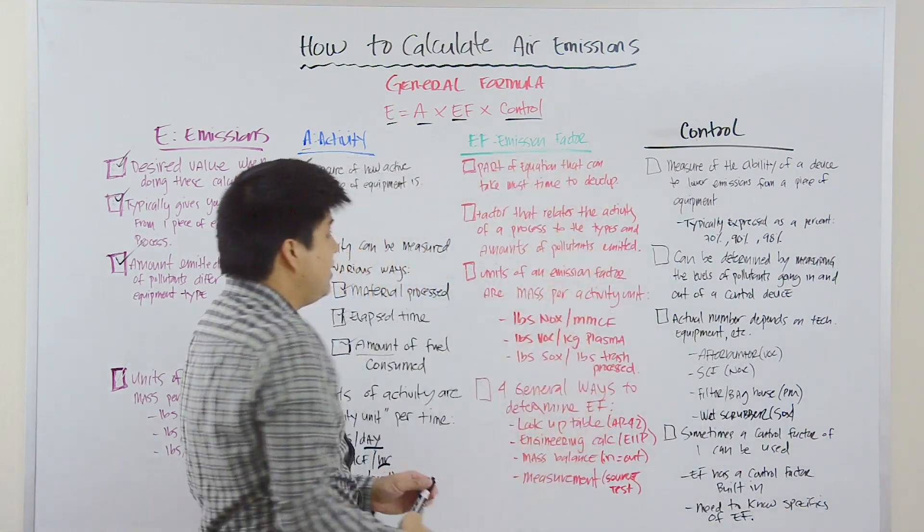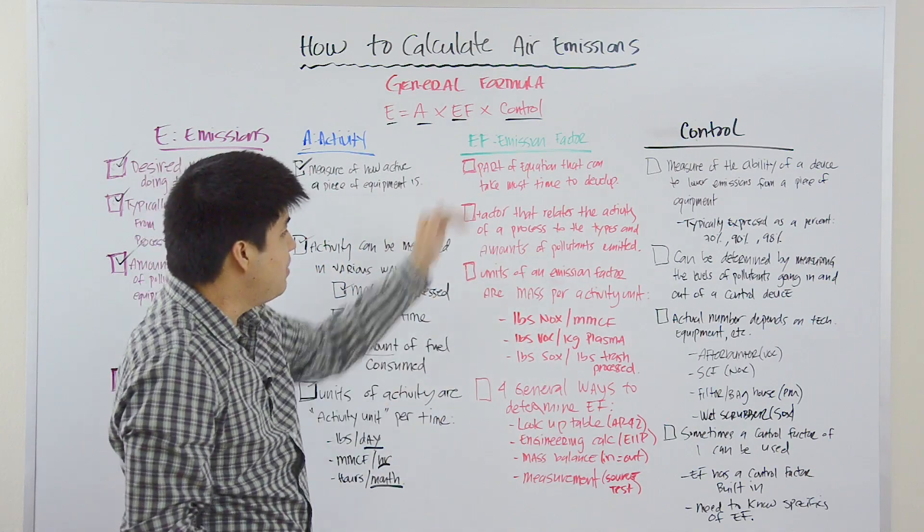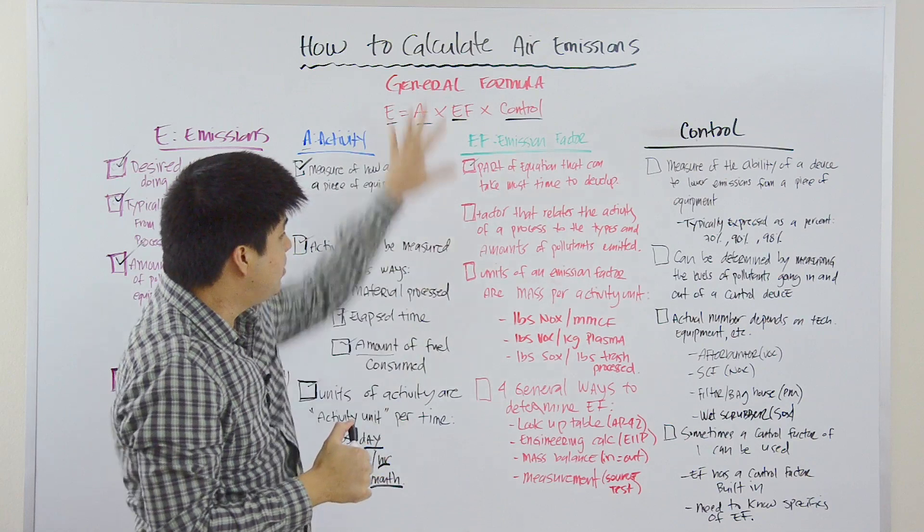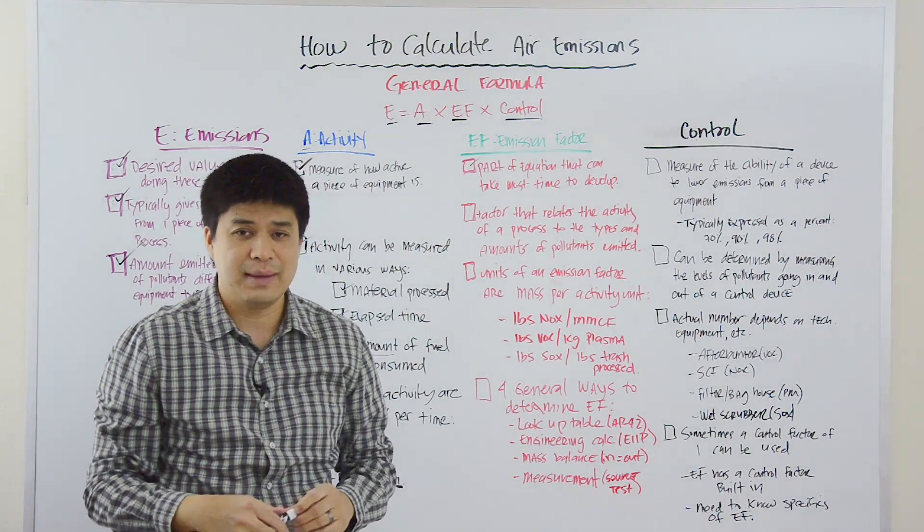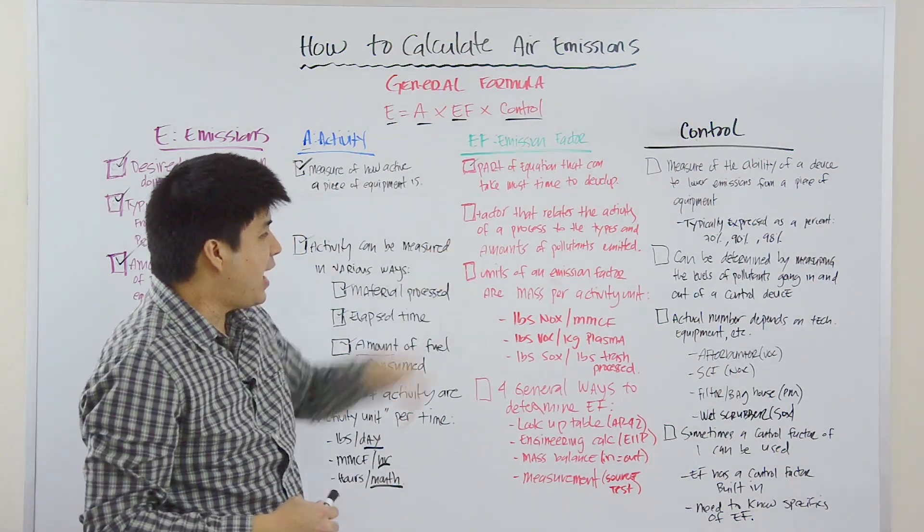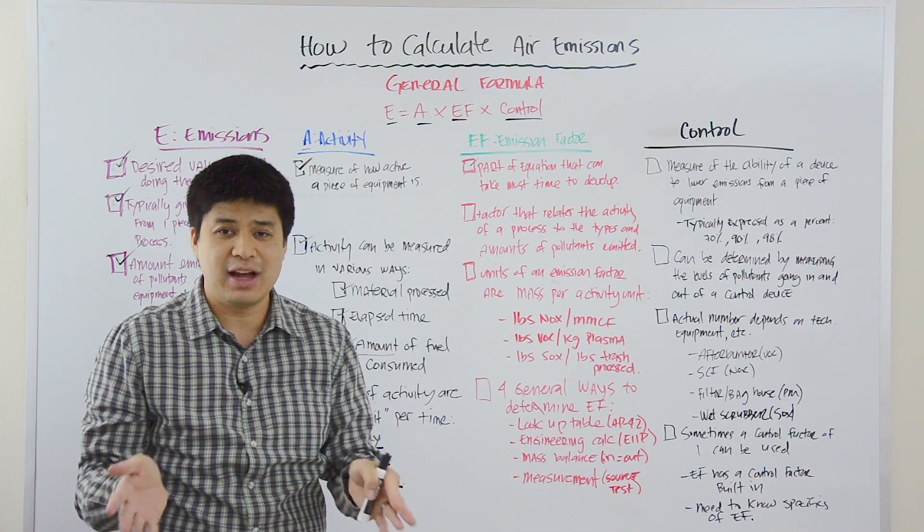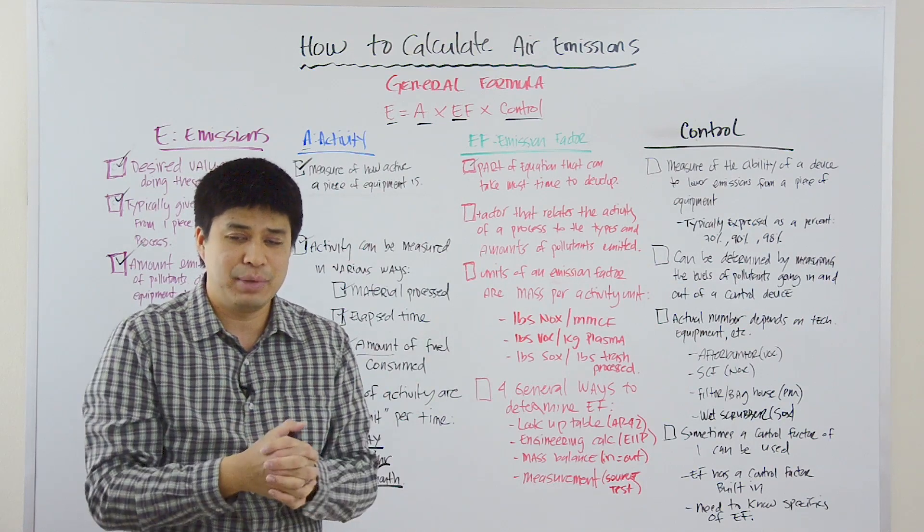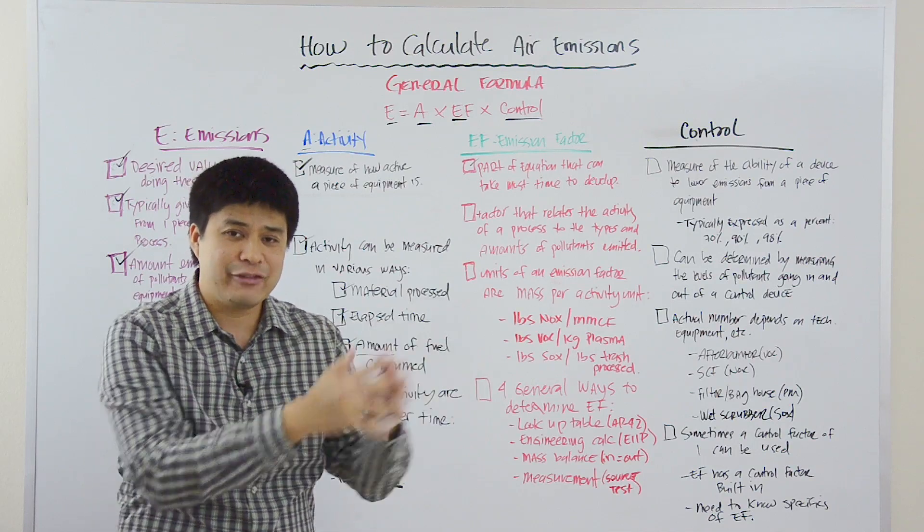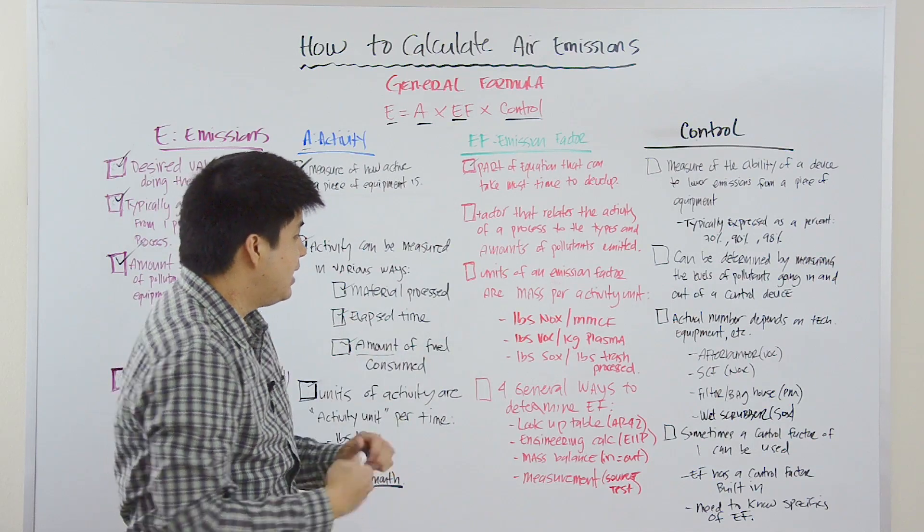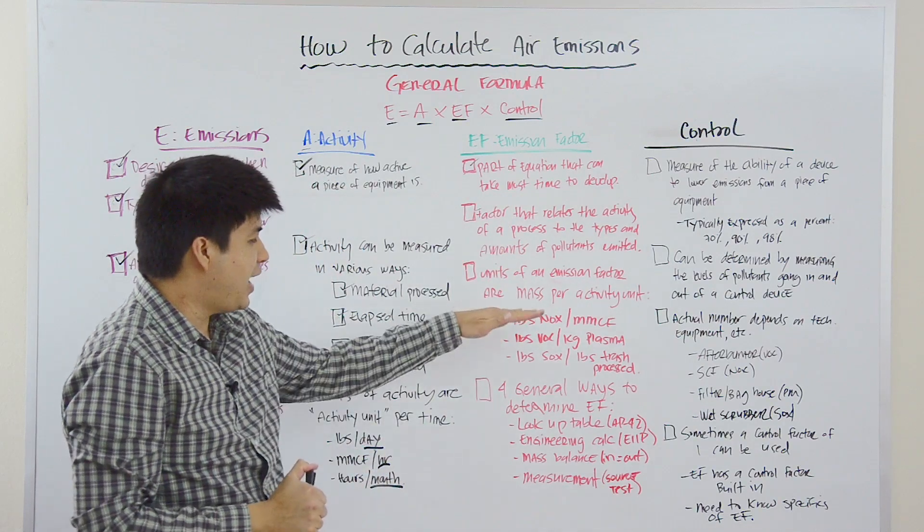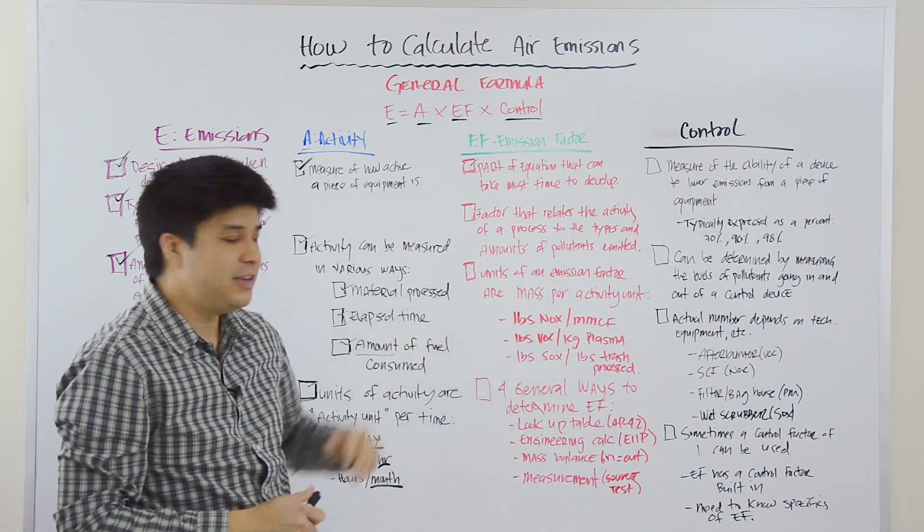The next piece here is the emission factor EF. The emission factor here is arguably the part of the one simple equation here that can take the most time to develop. It's a factor that relates the activity of the process to the amount and type or the types and amounts of pollutants emanating from that process. Now, the units of an emission factor are always mass per activity unit.